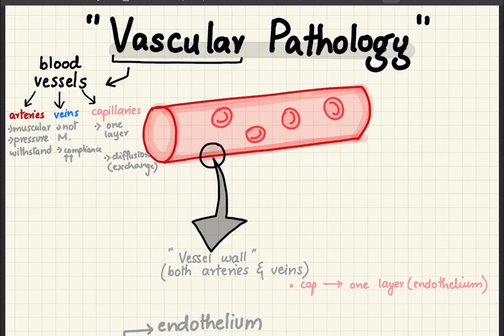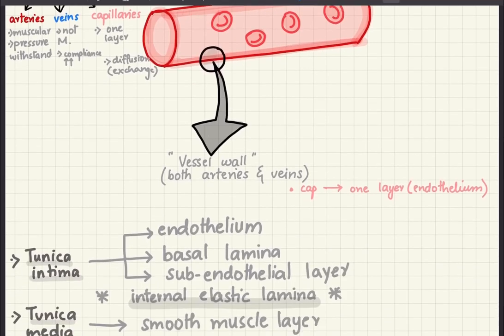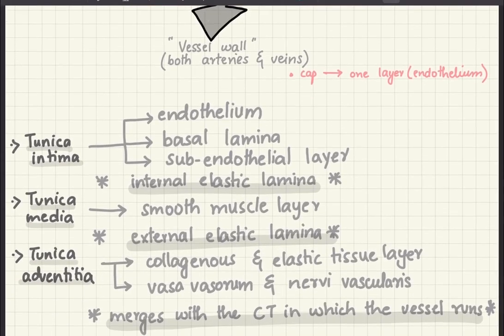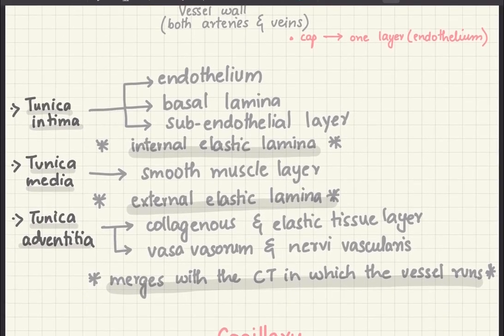Now here we have this blood vessel, and to know about the structure of the vessel wall in the case of both arteries and veins, we're going to see what layers make up the vessel wall. In both arteries and veins we have the same three layers: tunica intima, tunica media, and tunica adventitia, but the difference occurs in the thickness of each of these walls.